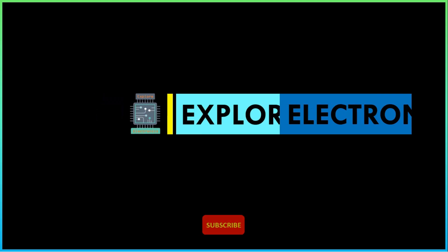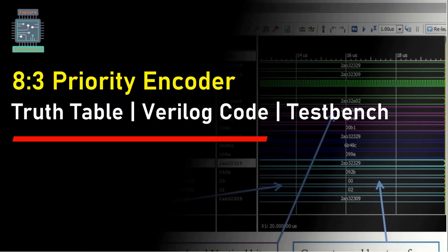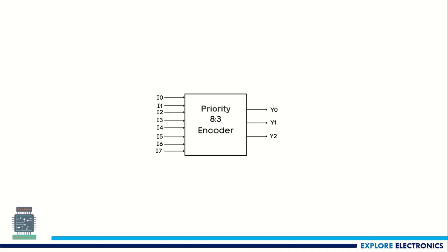Hello everyone, welcome back to Explore Electronics. In this video, let's see the 8-to-3 priority encoder — its truth table, Verilog code, and also a testbench. An 8-to-3 encoder means we have 8 inputs, and these 8 inputs will be encoded to 3 outputs. An 8-bit input will be converted into a 3-bit output — that is how the 8-to-3 encoder works.